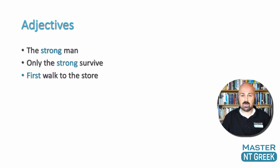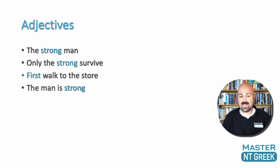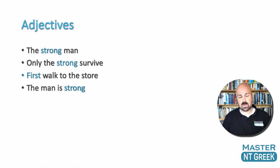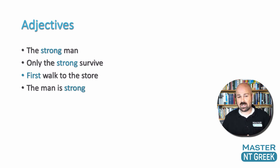But adjectives for the most part are used to describe a noun. Sometimes the way they describe that noun is in what we call a predicate construction. For instance, 'the man is strong' — here 'is strong' is a predicate, and the word 'strong' is still describing the man, but it's doing so within this predicate construction using the verb 'is' to predicate a description of the man.